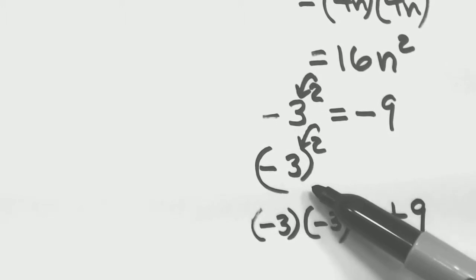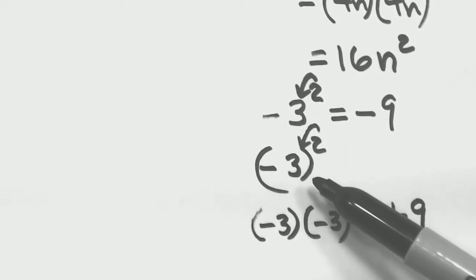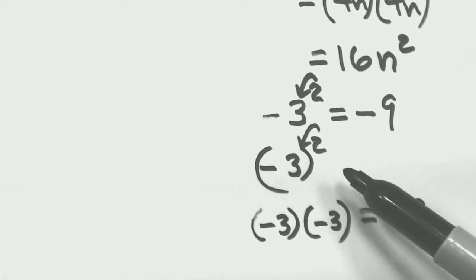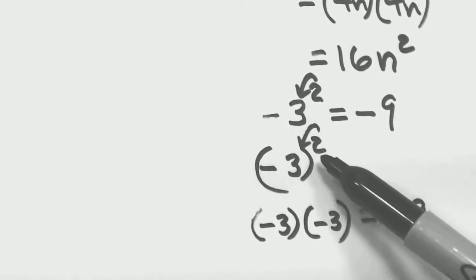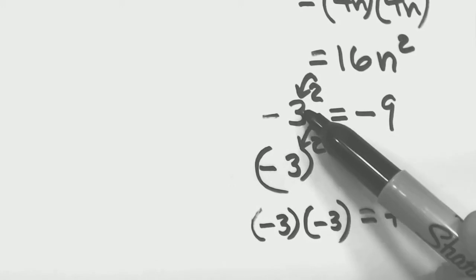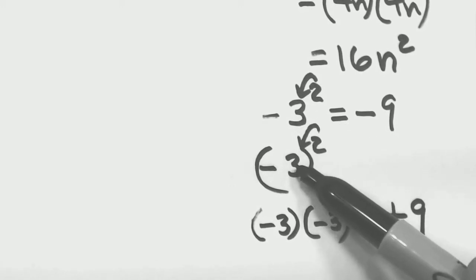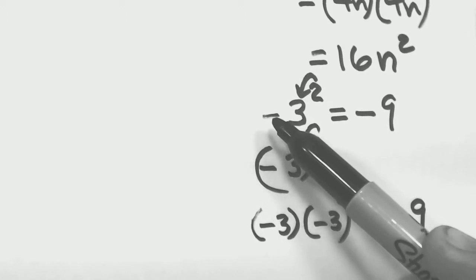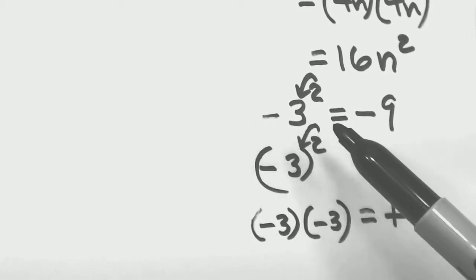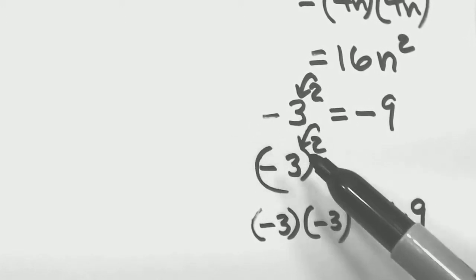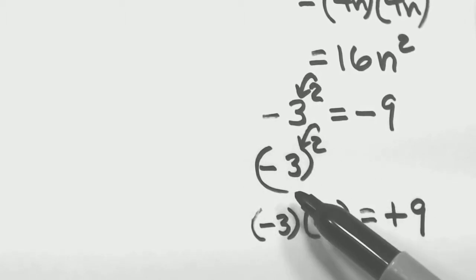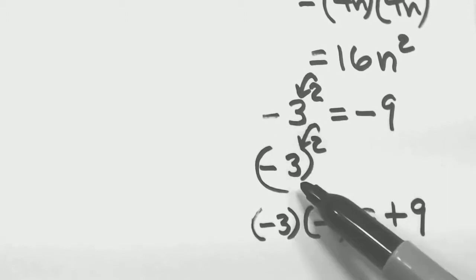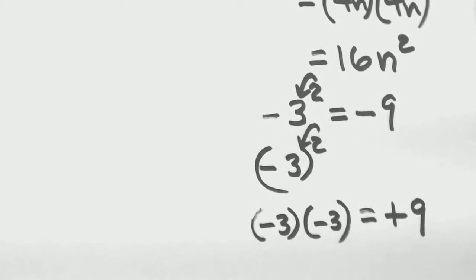These are subtle little differences but very important things we'll be running into many times. Remember, the rule is that the exponent only hits the guy immediately in front. If there's a sign or someone else, they're too far away. If you want everybody to be squared, simply put everybody in parentheses and square the parentheses.